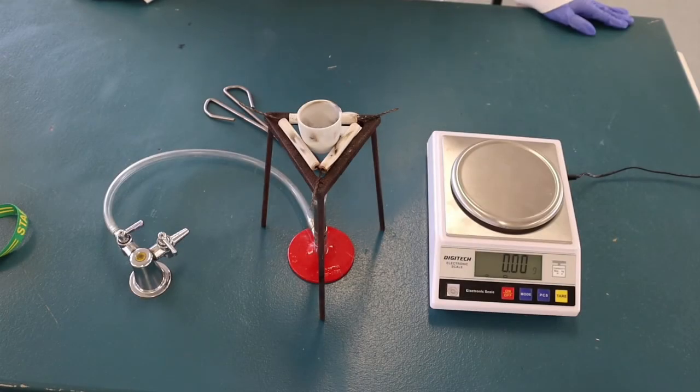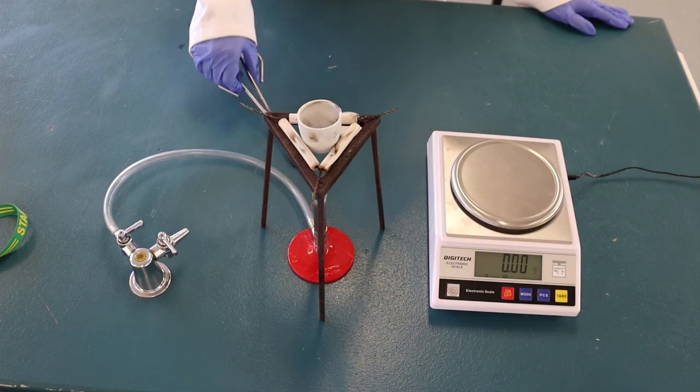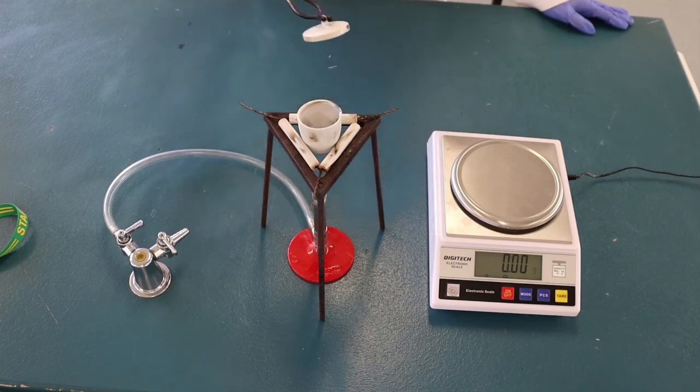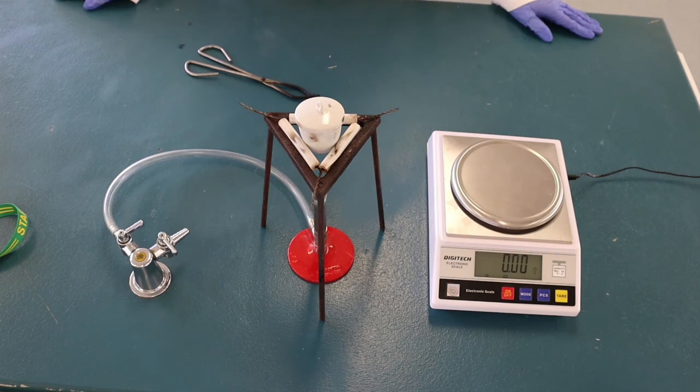Replace the lid and allow the reaction to cool. Reweigh the crucible lid and magnesium oxide.